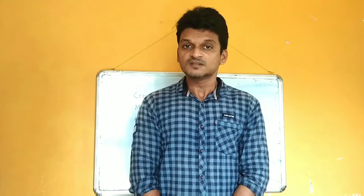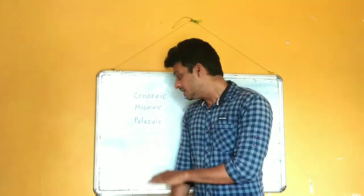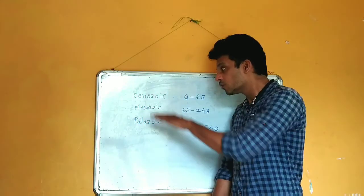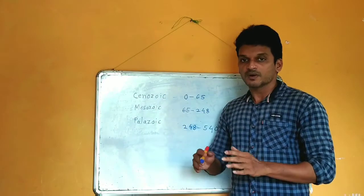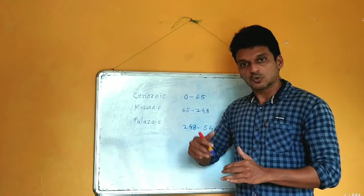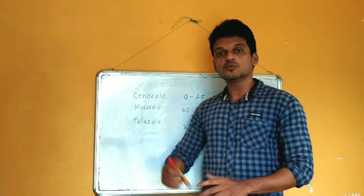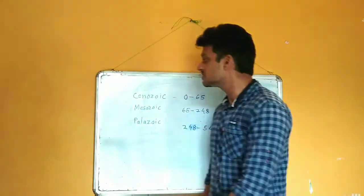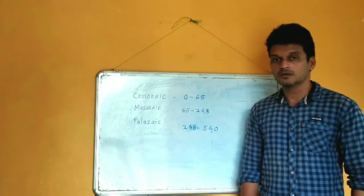This shows that invertebrates slowly evolved into vertebrates, and that is why this paleontological evidence — the study of fossils — supports the theory of evolution.